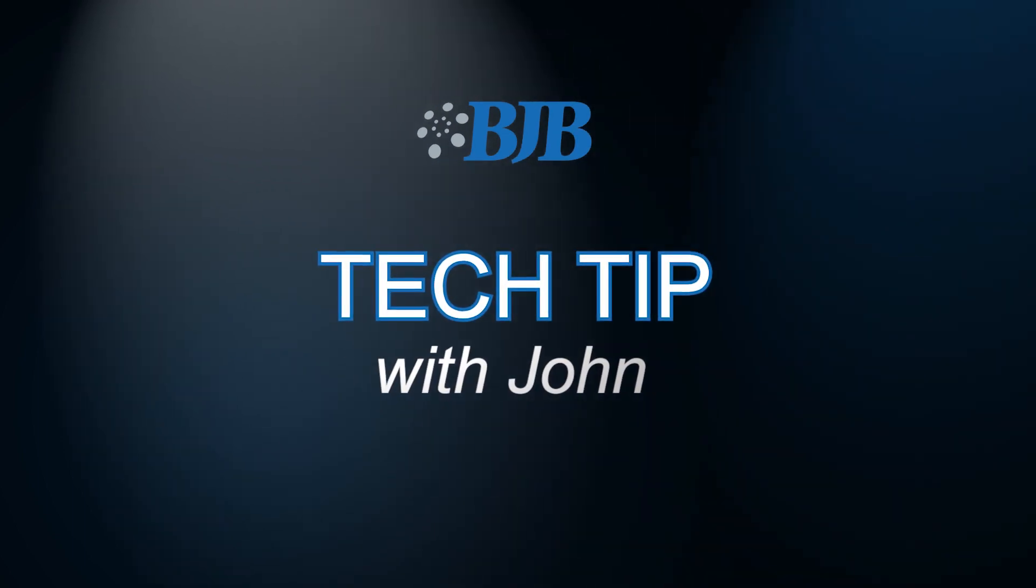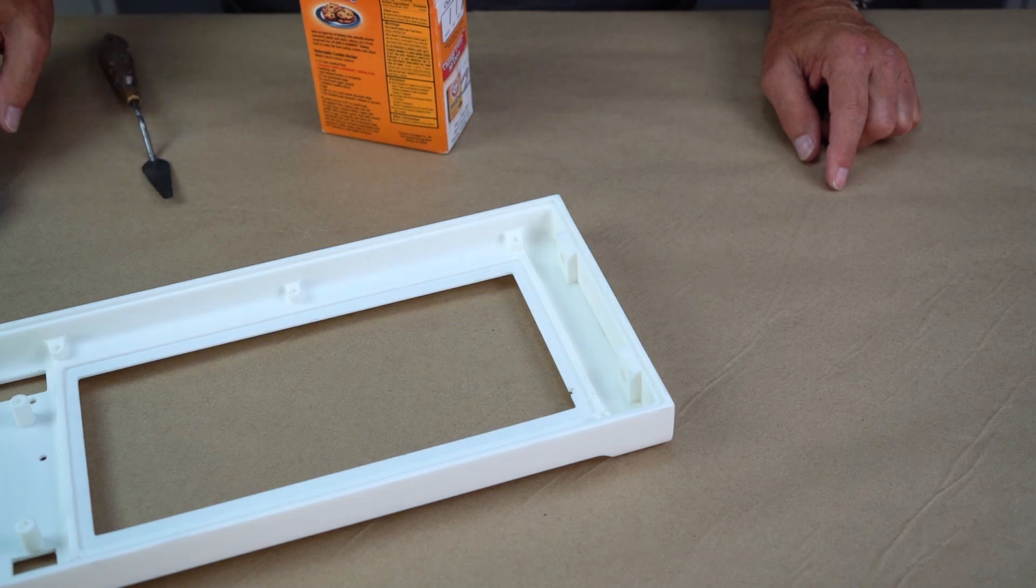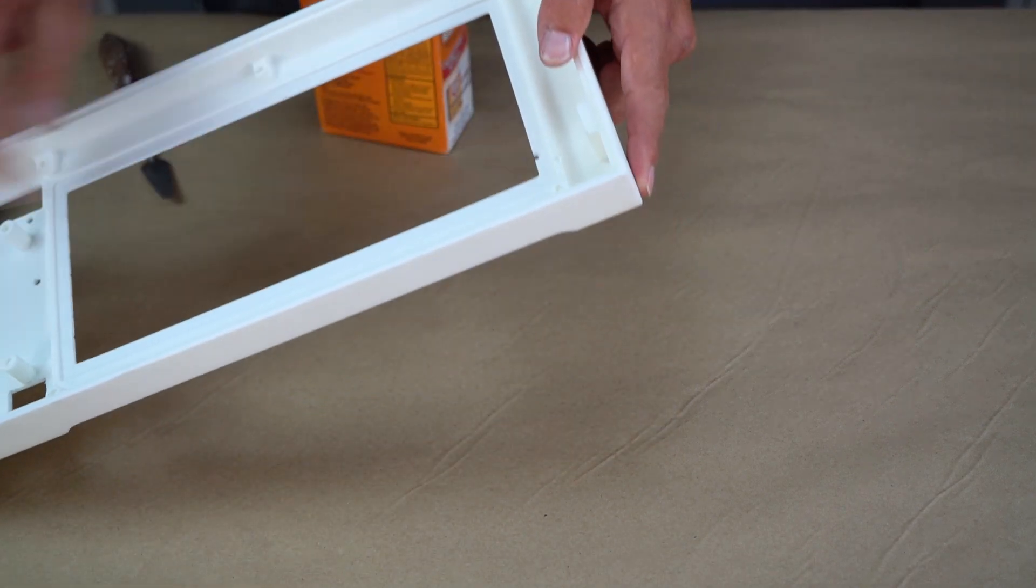This is a tech tip for repairing voids in cast parts using baking soda and super glue. So this is my first attempt at casting this bezel. It has a couple of small voids that need to be filled.